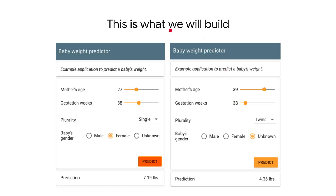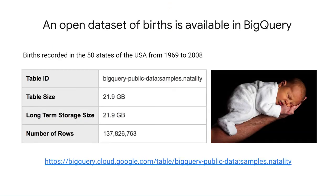For machine learning, we need training data. In our case, the US government has been collecting statistics on births for many years. That data is available as a sample data set in BigQuery. It's reasonably sized — it has about 140 million rows, 22 gigs of data. We can use this data set to build a machine learning model. In reality, you don't want to use data this old — 1969 to 2008 — but let's ignore that fact since this is a learning opportunity.